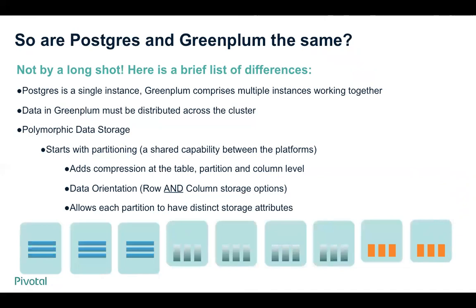Greenplum also has what we call polymorphic storage. This starts with partitioning — Postgres also has partitioning, but Greenplum does it a little bit differently. Greenplum has the ability to add compression at different levels: at the table, partition, or column level. The storage option can be set when you partition a table, so each individual partition can have its own row or column orientation and distinct storage attributes — it could be row-oriented, column-oriented, or you can specify that one of your partitions accesses external data from S3.